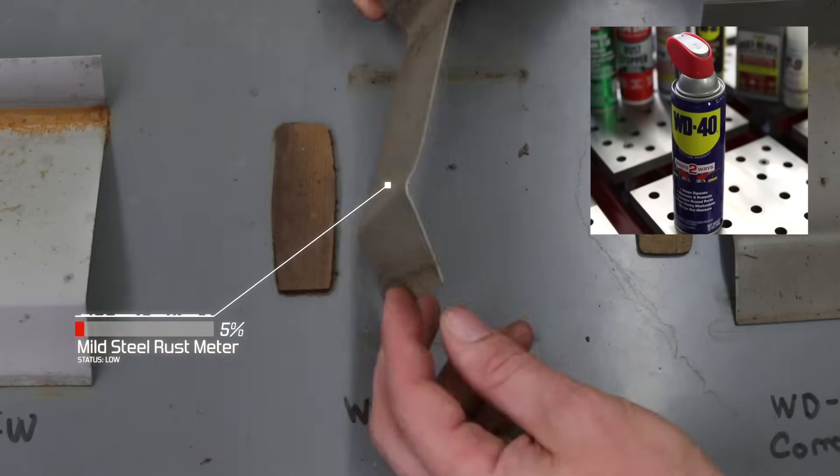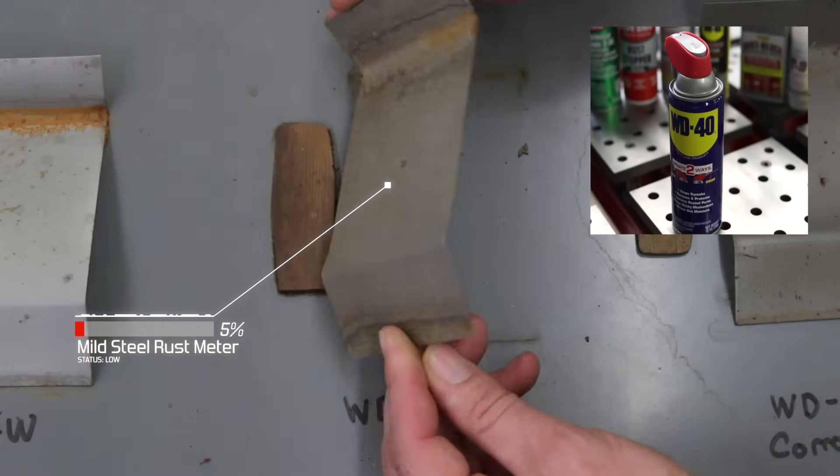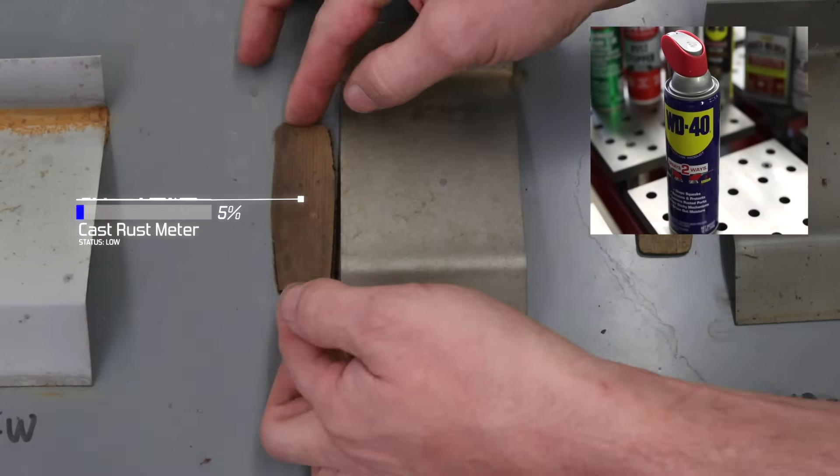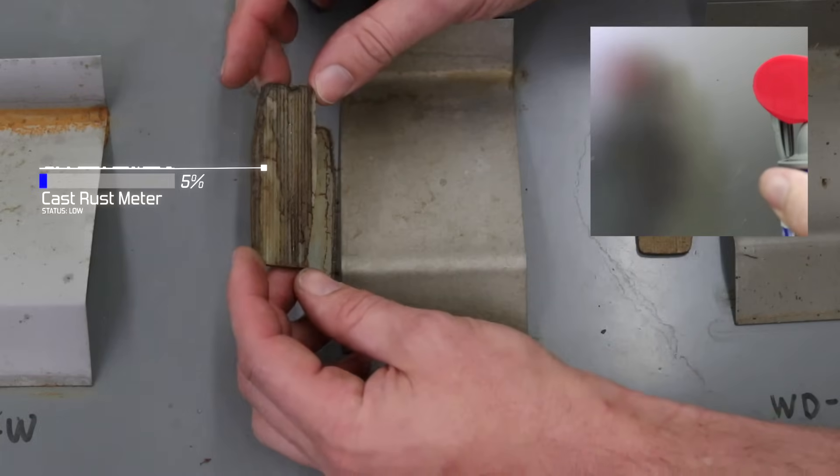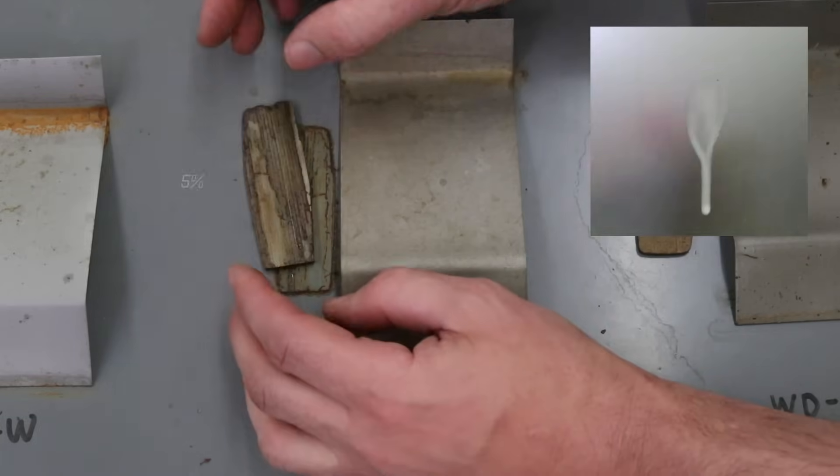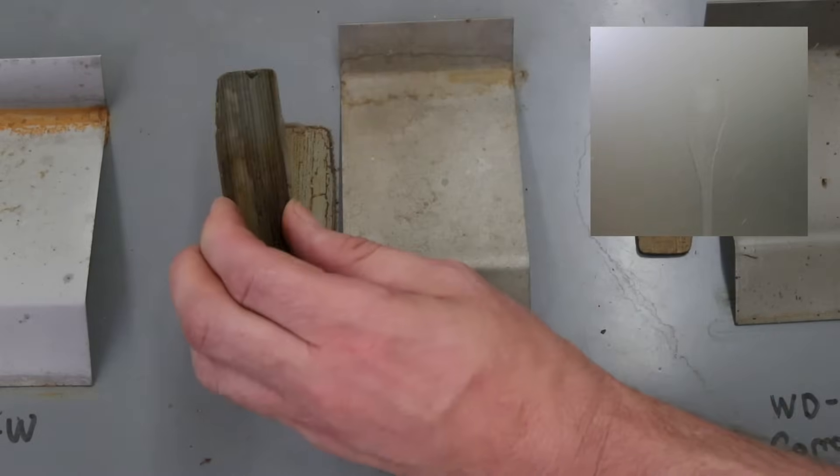WD-40. Here we go. Looks like it did pretty good. Actually, in a pinch I would use it. On the cast iron though, it left a really dirty film, kind of hard to get off. But it really didn't rust too bad.